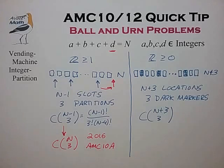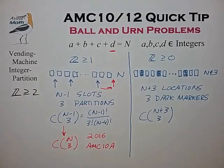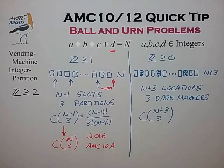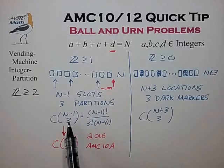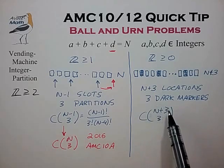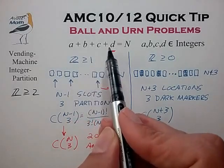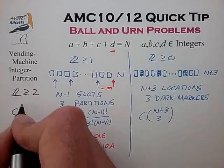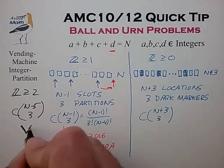As one last modification, let's consider the case where integers are constrained to greater than or equal to 2. It's hard to come up with a good picture for this, but we can see a pattern: going from z ≥ 0 to z ≥ 1, the bottom number of the combination stays the same (three in both cases), while the top number goes from n plus 3 to n minus 1 — a delta of 4, corresponding to the number of variables. So for z greater than or equal to 2, the expression becomes C(n-5, 3), which is in fact the correct expression.